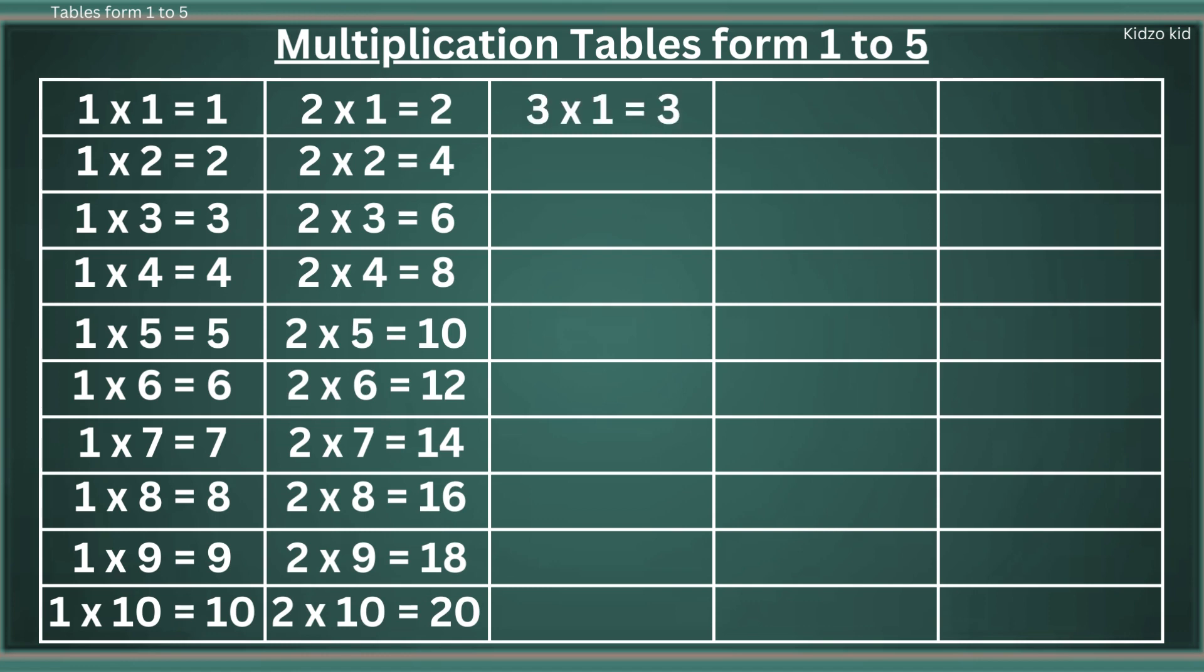3 1s are 3, 3 2s are 6, 3 3s are 9, 3 4s are 12, 3 5s are 15.